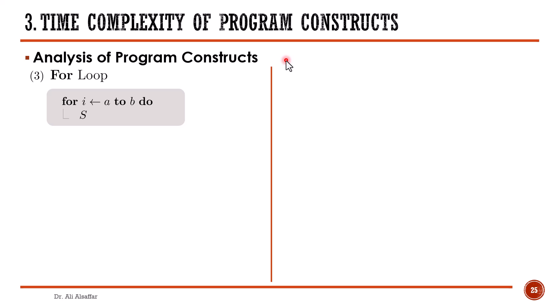After finishing with selection, we now turn to loops. To analyze loops, we will first consider single loops, then cover nested loops. We start with a single for loop, which consists of three parts: initializing the loop variable i, testing the condition to stop the loop, and incrementing the loop variable in every iteration.